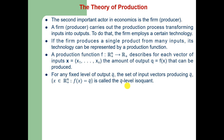An isoquant is nothing but a curve or a line combining various combinations of two inputs — in the case of two goods — that can be used to produce the given amount of output. In the n-goods case, it is a vector of various inputs which can be used in various combinations to produce a given level of output. So an isoquant is just a level set of the function f.